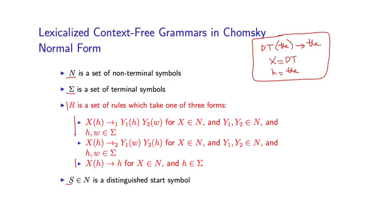Now let's look at these two remaining cases. This says I can take any three non-terminals X, Y1, Y2, and any two words H and W, and I can have a lexicalized rule where X(H) rewrites as Y1(H), Y2(W). Let me give you an example of such a rule.